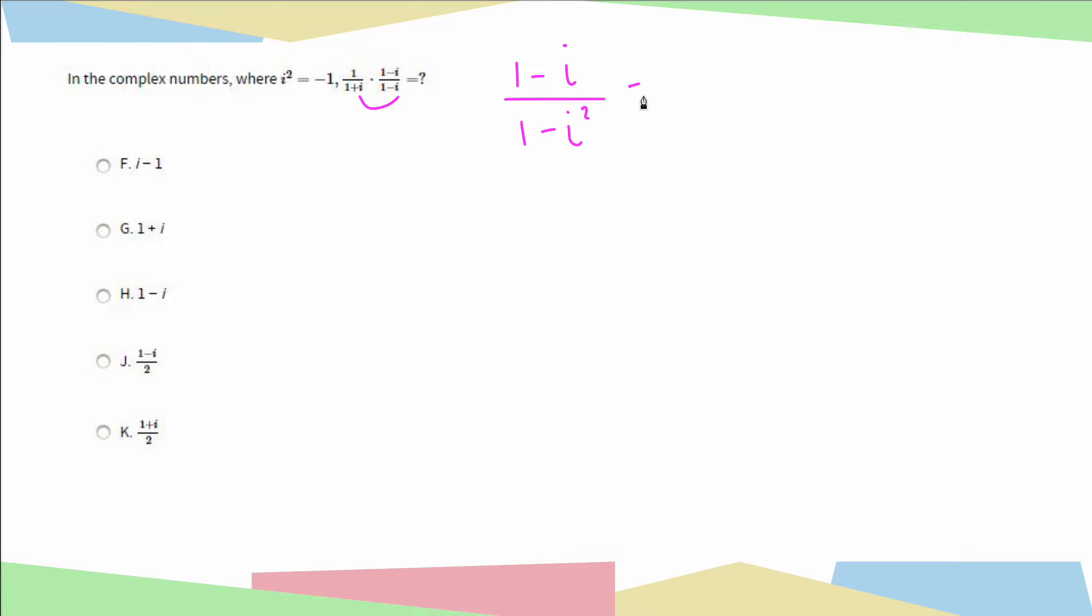Then we're just going to take one quick second to simplify. 1 minus i over, remember i squared is negative 1, so 1 plus 1 is 2. And that leaves us with the correct answer choice of j.